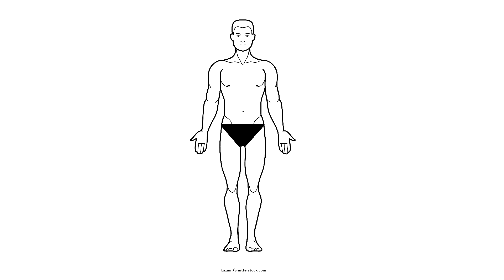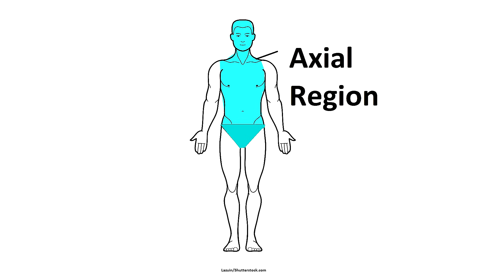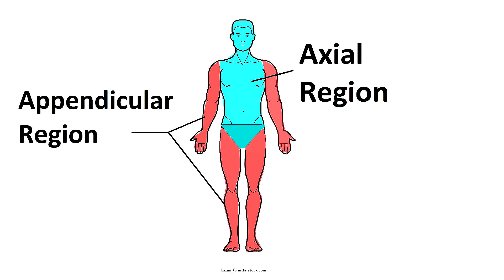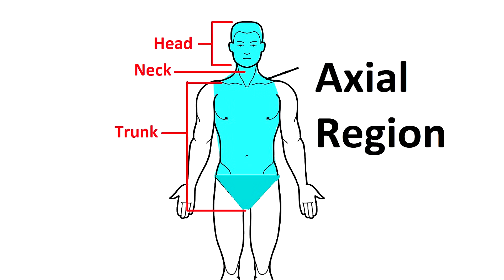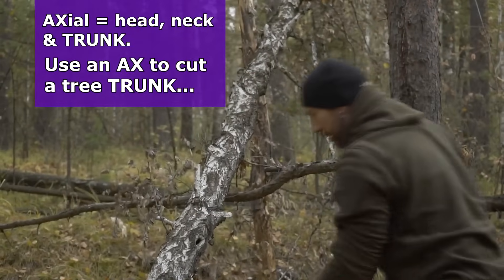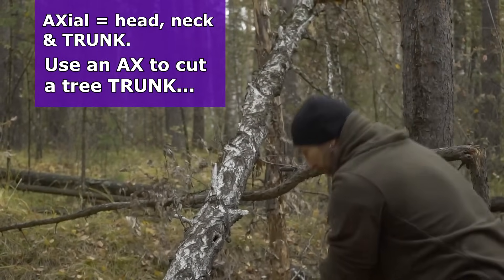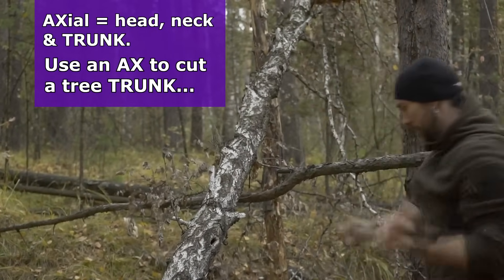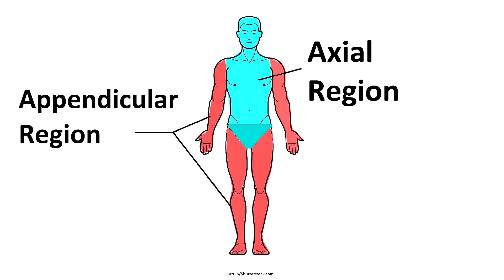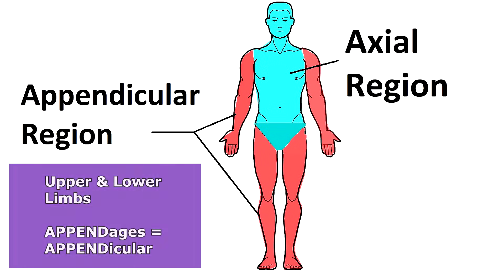There are two major regions of the body: the axial region and the appendicular region. The axial region covers the head, neck, and trunk. A way to remember this is that it begins with 'axe' — why do people use an axe? To cut down a tree trunk. The appendicular region includes the upper and lower limbs; an appendage is something that attaches or comes off of another structure.